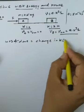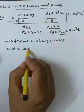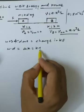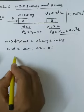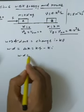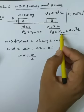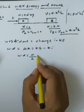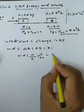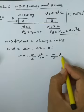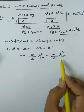Work done = ΔK = K_final − K_initial. So work done = (1/2)m·V²(at 2m) − (1/2)m·V²(at 0m). We substitute velocity V = ax^(3/2) at both positions.